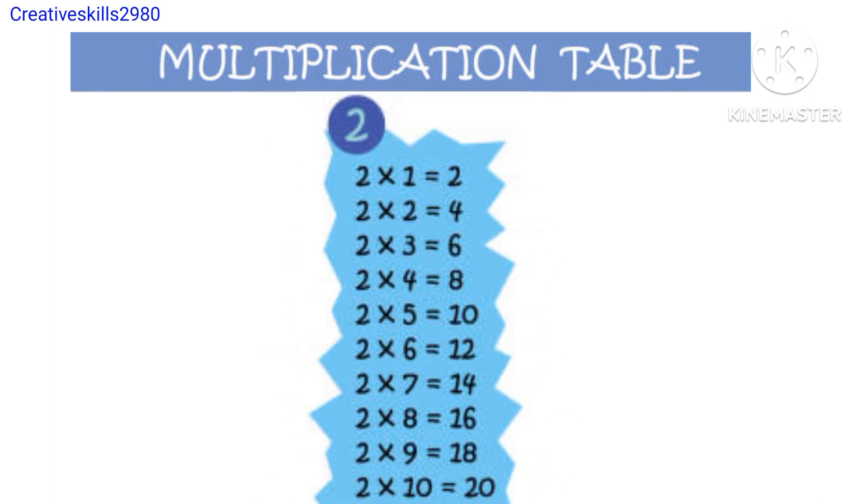2 1s are 2, 2 2s are 4, 2 3s are 6, 2 4s are 8, 2 5s are 10, 2 6s are 12, 2 7s are 14, 2 8s are 16, 2 9s are 18.